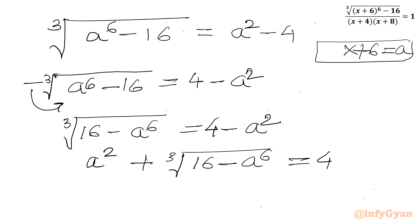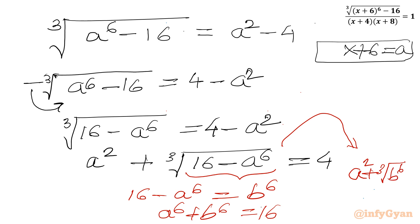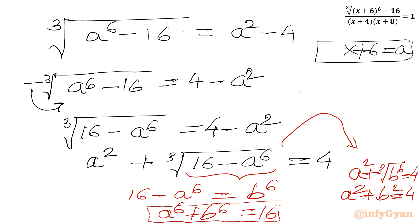Now I will use substitution to solve this radical equation. I will consider the radicand equal to b to the power 6. So let: 16 minus a to the power 6 equal to b to the power 6, which gives a to the power 6 plus b to the power 6 equal to 16. And from the rearranged equation: a squared plus cube root of (b to the power 6) equal to 4, and since cube root of b to the power 6 is b squared, we get a squared plus b squared equal to 4. So we now have a system: a squared plus b squared equals 4, and a to the power 6 plus b to the power 6 equals 16.